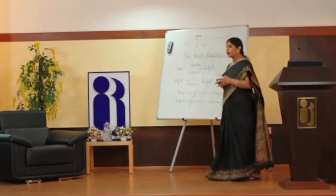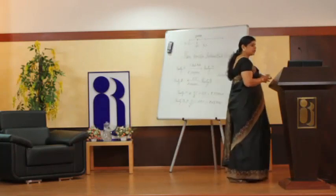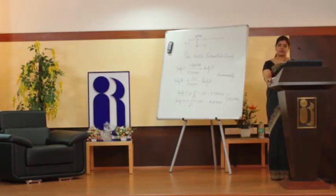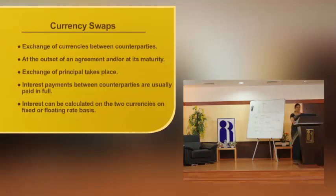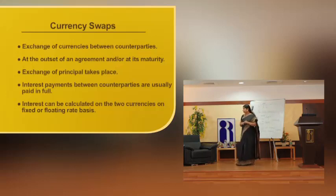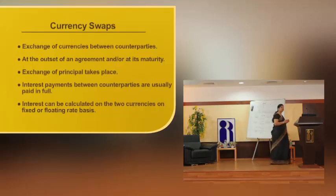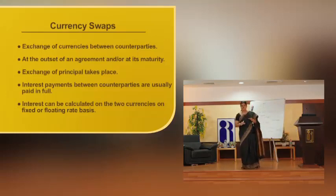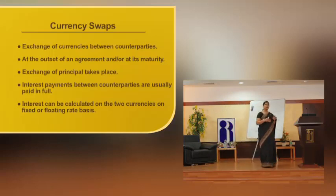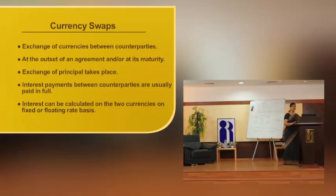Coming to the next category of swap, which is very popular with banks — the currency swap. A currency swap is an agreement between counterparties in which one party makes payment in one currency and the other party makes payments in a different currency on an agreed future date until maturity. Exchange of currencies between counterparties takes place at the outset or on maturity. The basic difference from interest rate swaps is that in currency swaps, there is no netting off, because the notional principal is denominated in two different currencies.